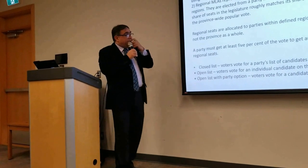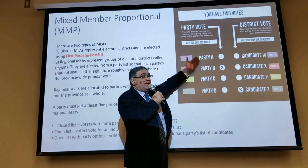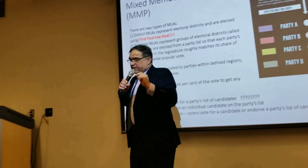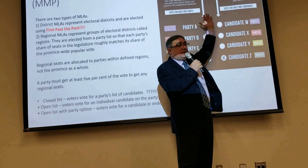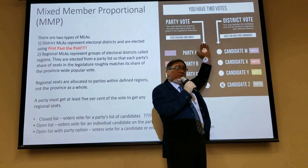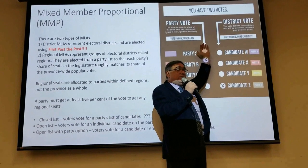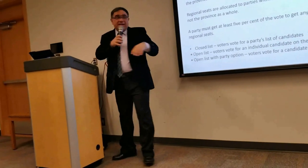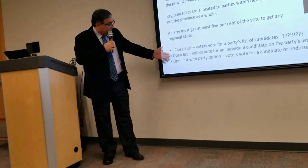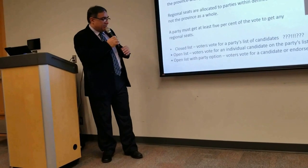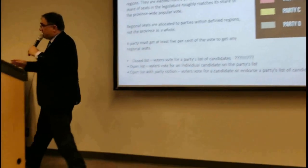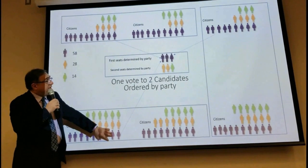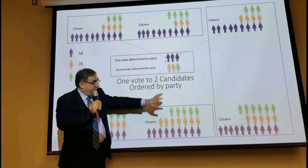The other problem with MMP is that when it comes to selecting the second set of people who go to parliament, you don't even vote for them. There is a list that parties publish — they will use these people in this order to create proportionality. This can be done via closed list, open list, or open list with party option. When local candidates go to parliament as first choices, all of them would be from the same party, and nobody asks you about your second choices.